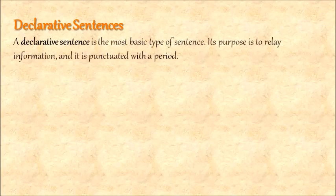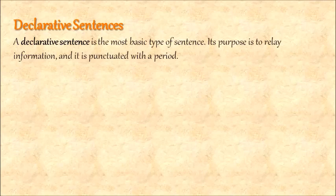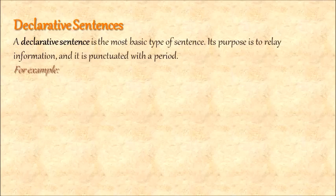The first type is declarative sentences. A declarative sentence is the most basic type of sentence. Its purpose is to relay information and it is punctuated with a period. With declarative sentences, what we get is information — a statement. In some other books, you would also find it called assertive sentences. Its purpose is narration and it is punctuated with a period. Here are some examples: the boy walked home.